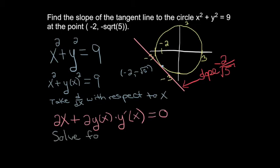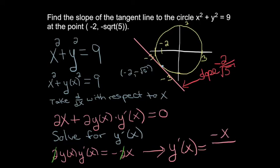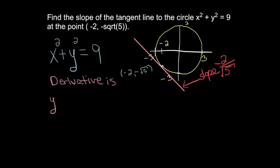The next step is to solve for y prime. Subtracting 2x from both sides and canceling the 2s, then dividing by y, gives y prime equals negative x divided by y. So the derivative on a circle derived from the implicit form using implicit differentiation is negative x divided by y.